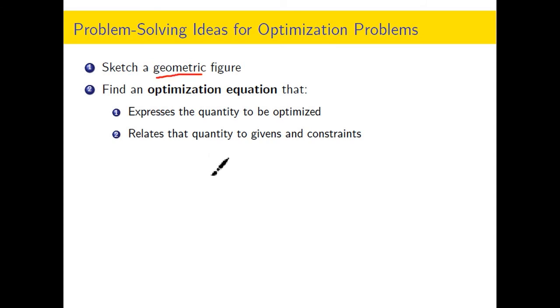The optimization equation has to have the quantity you're asked to optimize. If you're asked to optimize a volume, you're going to write down a volume formula, and you want to make sure that it relates the quantity to the givens and the constraints.